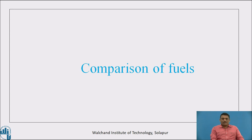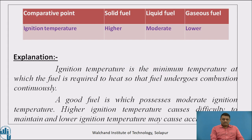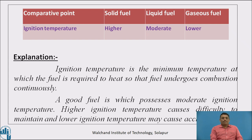Now we will start our main point — how these fuels are compared over each other. The first comparative point is ignition temperature, and we will compare this for solid, liquid and gaseous fuel. Ignition temperature is the minimum temperature to which the fuel is required to be heated so that it undergoes combustion continuously. A good fuel possesses moderate ignition temperature, because higher ignition temperature causes difficulty to maintain and lower ignition temperature causes accidents. Solid fuels have higher ignition temperature, liquid fuels have moderate ignition temperature and gaseous fuels have lower ignition temperature.